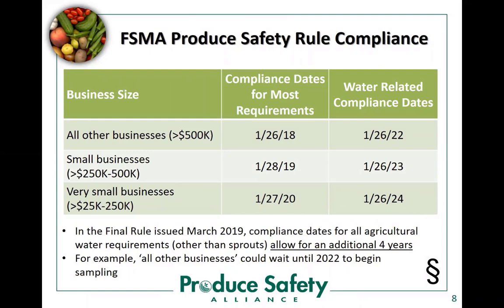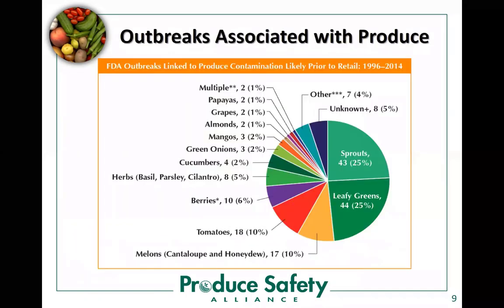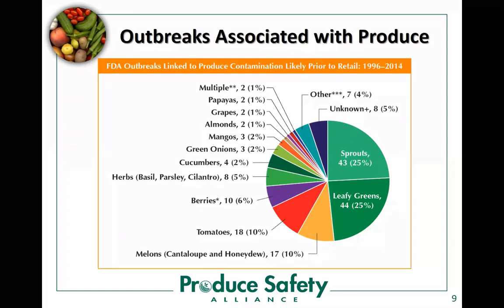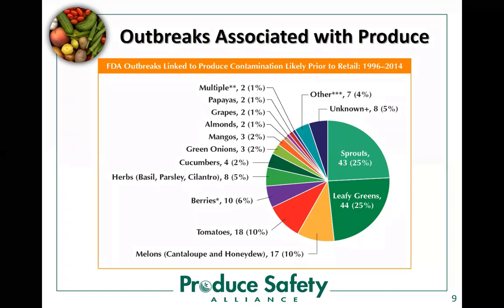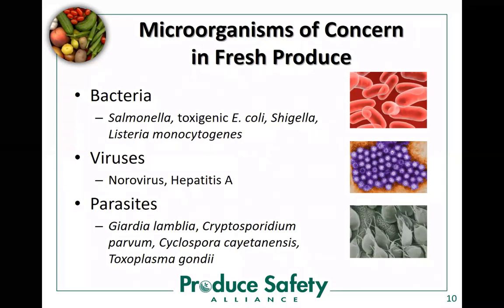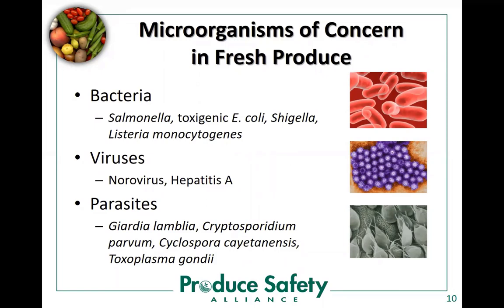Slide 8 covers compliance dates. Shifting gears — you may want to pause and see if there are any questions before moving on to microbiology basics. Slides 9 through 17 help get all participants to a common understanding of basic microbiology concepts that will be a good foundation as we move through the topics in the course. Slide 10 is an overview slide where you may want to make a point that the differences between bacteria, viruses, and parasites are relevant on the farm because of different animal versus human sources and different modes of reproduction and survival.